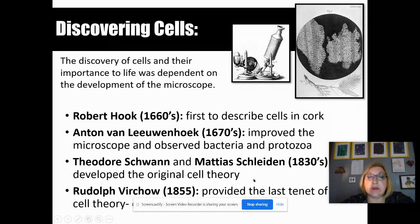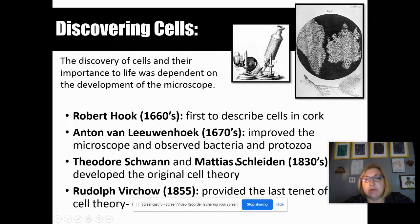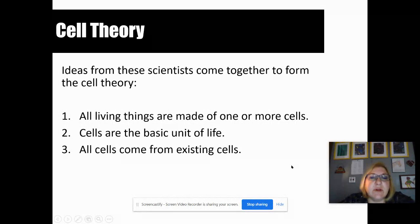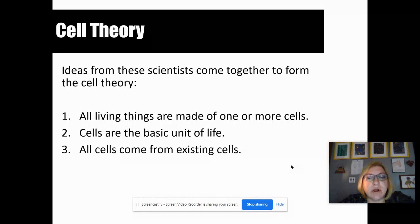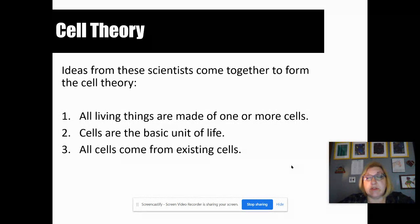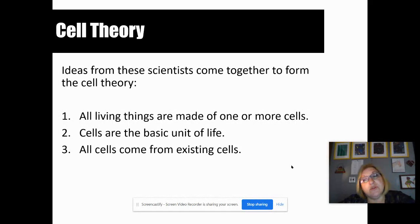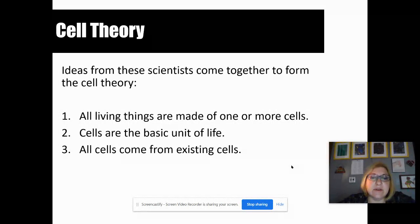Back in the 1830s, Theodor Schwann and Matthias Schleiden came up with the original cell theory. Then Rudolf Virchow in 1855 provided the last concept for cell theory. So this is cell theory: all living things are made of one or more cells. If you're not made of cells, you're not classified as alive — which is one of the reasons why stars are not classified as alive, even though they grow, reproduce, use fuel, and move. Cells are the basic unit of life, and all cells come from existing cells.